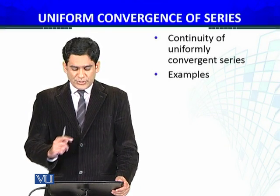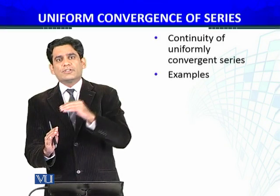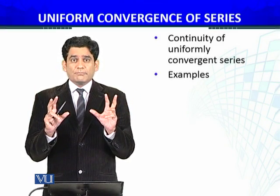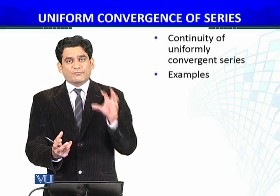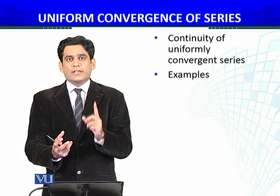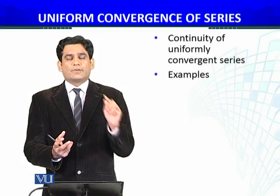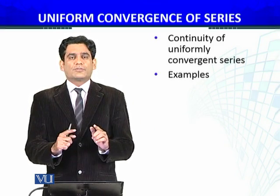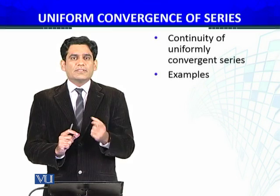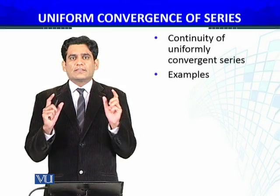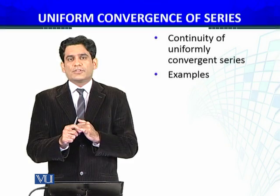So what we are going to discuss is the continuity of a uniformly convergent series. If a series is uniformly convergent and converges to some function f(x), that f(x) will be continuous at x equals x naught — even if we can't determine f(x) explicitly — provided each term f1, f2, f3 of the series is continuous at x equals x naught. We will do some examples of this.